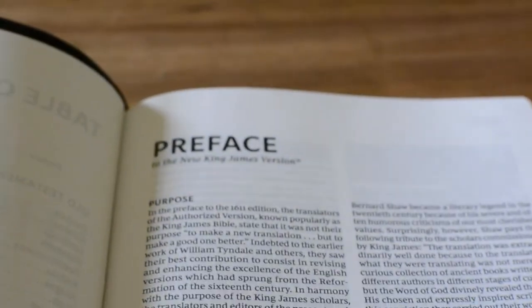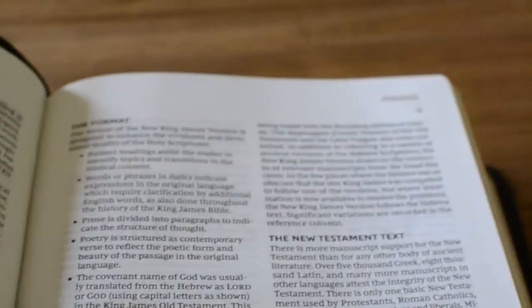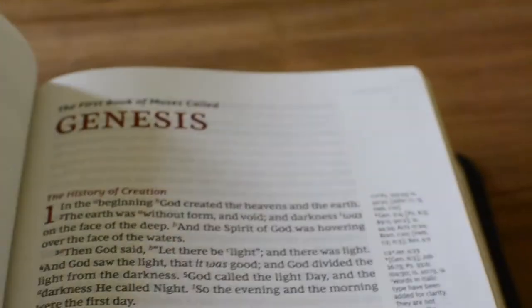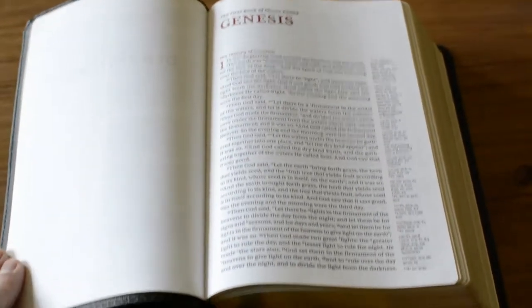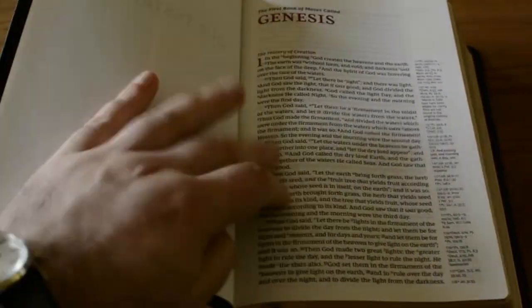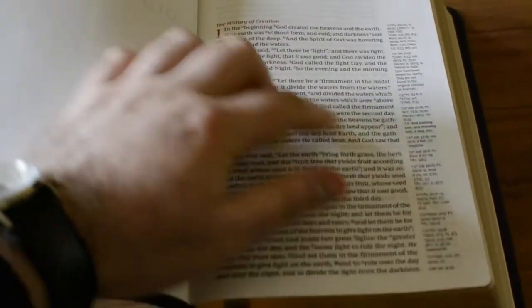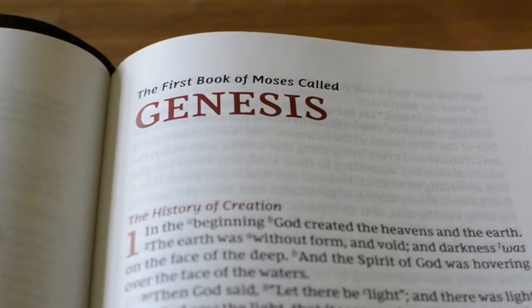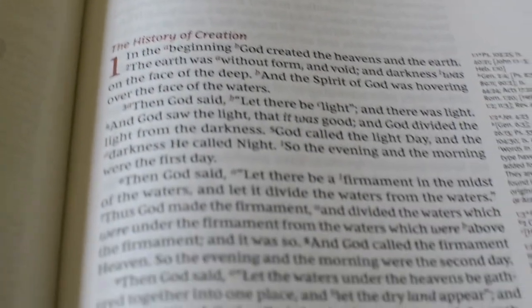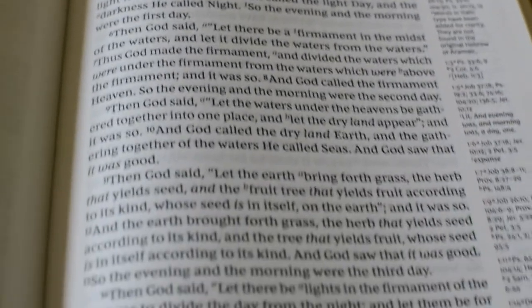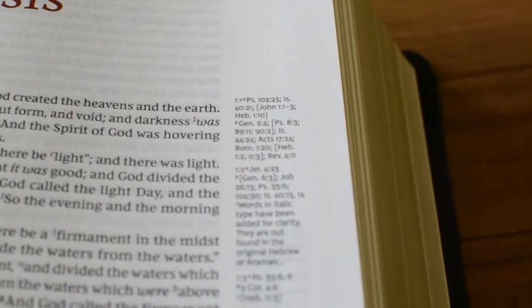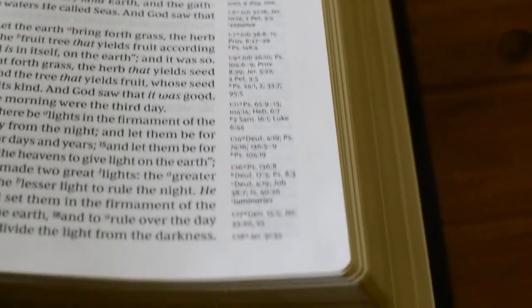Very crisp. We've got the preface and we are here in Genesis. It's a single column as you can see, very nice and crisp print. I really like this. You have here on the right the references. It has red highlights for the chapters, the titles of the books, and also the numbers on the references on the outer margin.